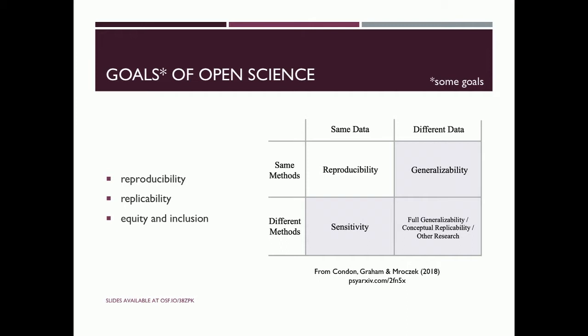Just to clarify reproducibility and replicability, because these terms are often used differently by different fields: when I speak about reproducibility, I mean you should be able to use my data and my methods and get the exact same results — it's did you get that number that I got in my paper. Whereas replicability is the idea that we can use different data and the same methods to get the same or similar results. And those are both distinguished from sensitivity and conceptual replications.